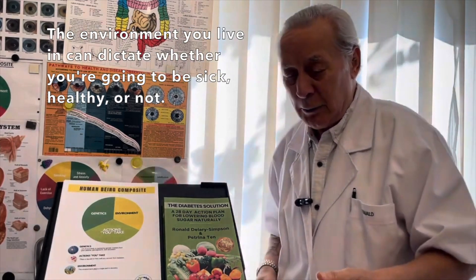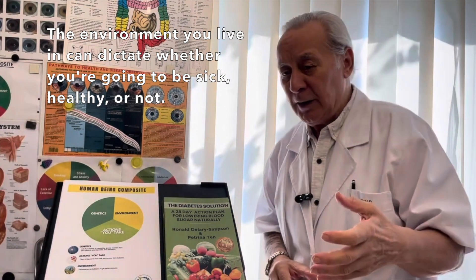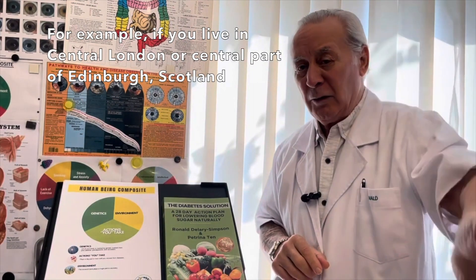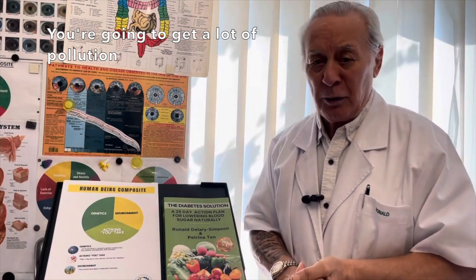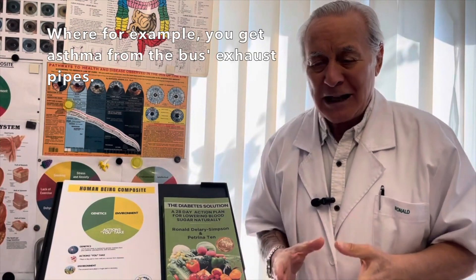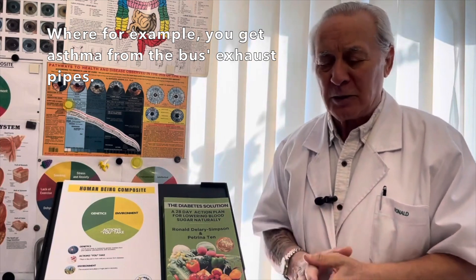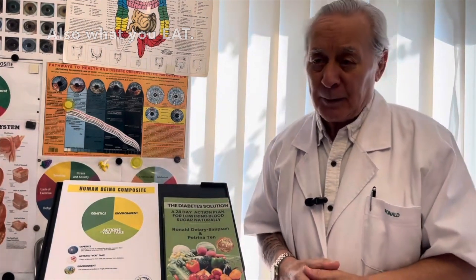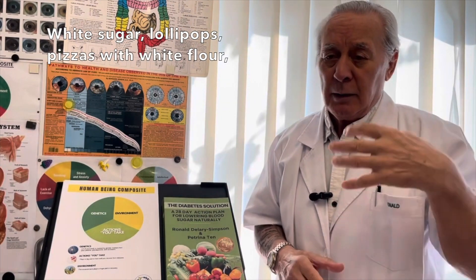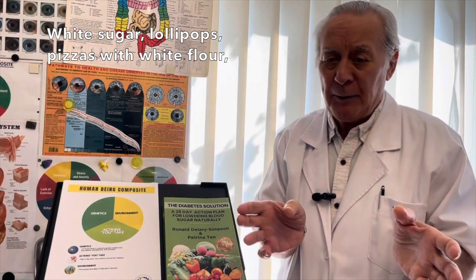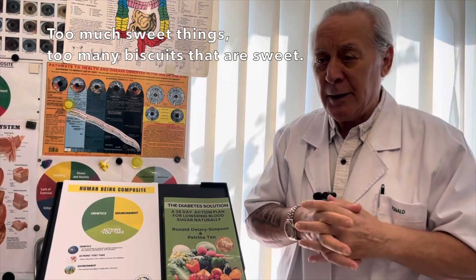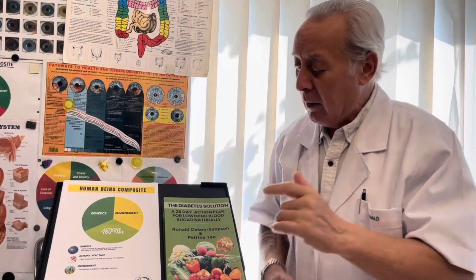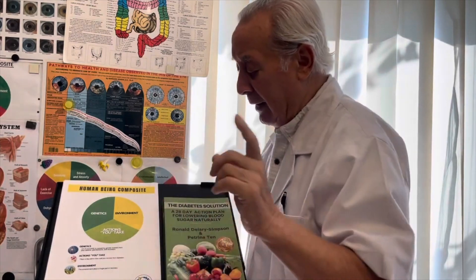One-third is the environment you live in. The environment can dictate whether you are sick or healthy. For example, if you live in central London or central Edinburgh you're going to get pollution — asthma from bus exhaust pipes and so on. The environment also plays a big part in diabetes through what you eat: white sugar, lollipops, pizzas with white flour, too many sweets and biscuits.